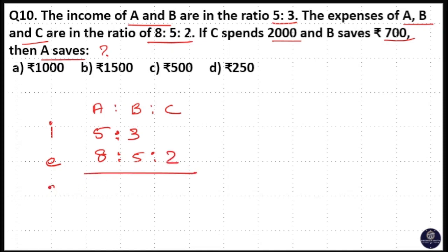So savings means savings is equal to income minus expenditure. Here you know if C spends 2000, C means 2 unit. So I will write income unit as 5x, 3x and we don't know the C unit. Then expenditure unit as 8y, 5y and 2y.